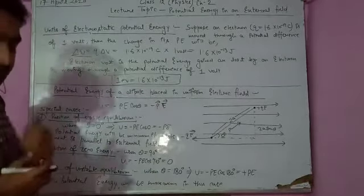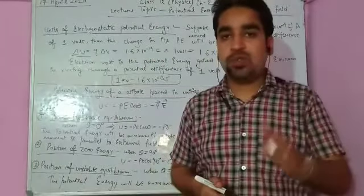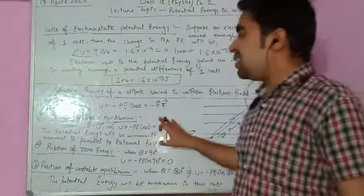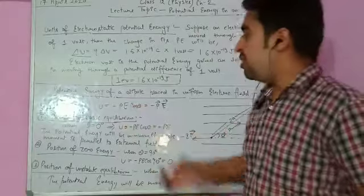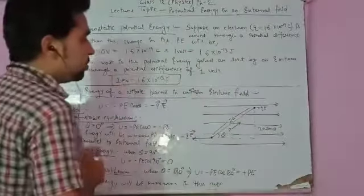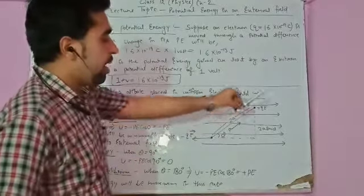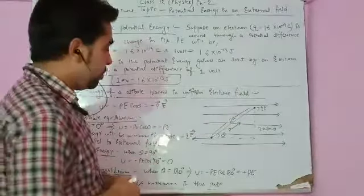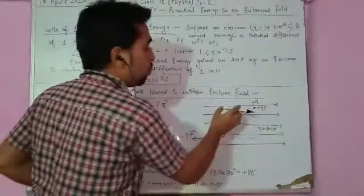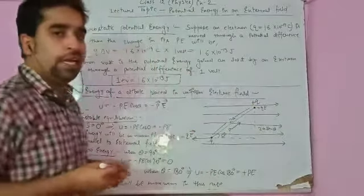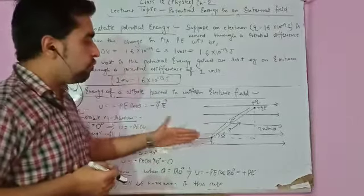Now, students, let's discuss the potential energy of a dipole placed in a uniform electric field. Some of you might think we already covered this topic, but there are special cases remaining. So let us discuss it once again and then come to those special cases. We have a dipole placed in an external field — suppose this is a minus q charge and this is a plus q charge. The plus q charge will go towards the field and the minus q charge will go away from the field.